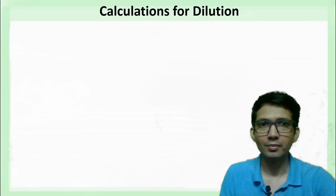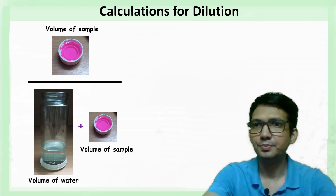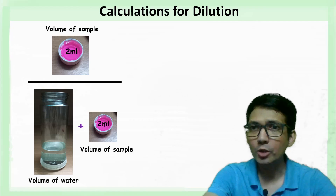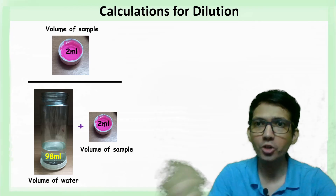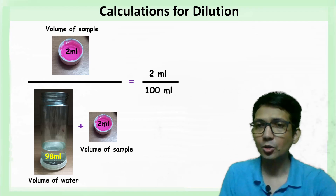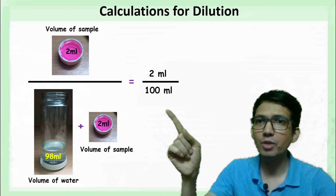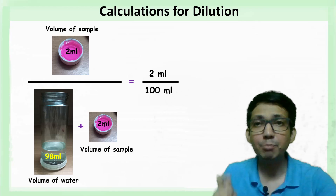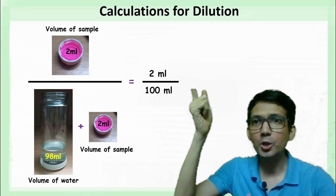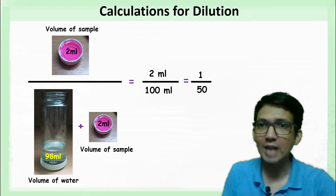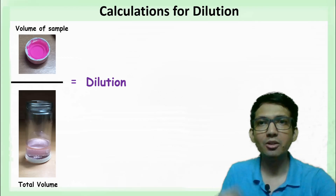Let's understand dilution with a simple example. Say the sample volume is 2 milliliters and it was added to 98 milliliters of water. The total volume after mixing is 98 + 2 = 100 milliliters. So dilution = sample volume / total volume = 2/100 = 1/50.